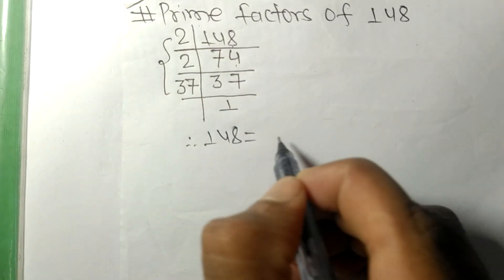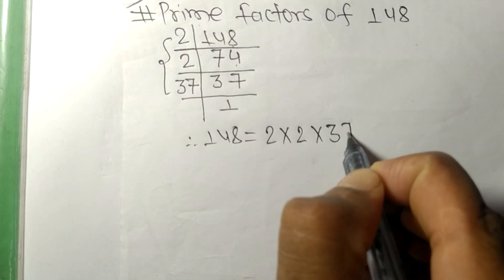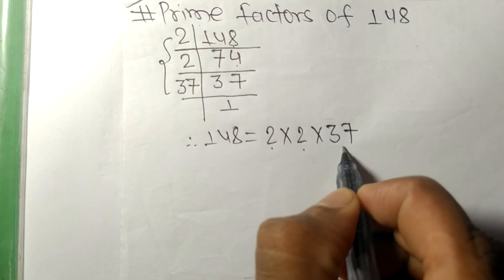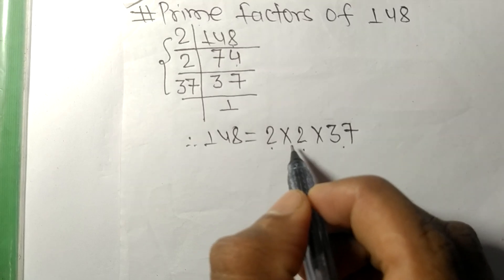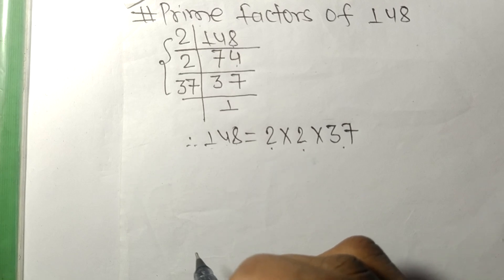From this side it is 2 times 2 times 37. So 2, 2, and 37 are the prime factors of 148. This is all for today, and thanks for watching.